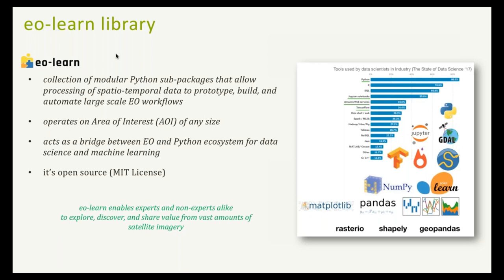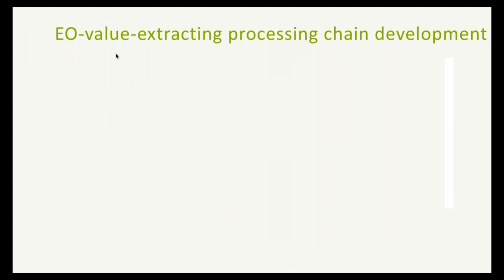eo-learn is a collection of Python sub-packages that mainly aims to process spatial-temporal data, enabling users to prototype, build, and automate large-scale EO workflows. What makes it different from other packages is that it operates on any area of interest of any size — it's not limited to a Sentinel-2 tile. We hope eo-learn acts as a bridge between earth observation and the Python ecosystem for data science and machine learning. It's open source, published under the MIT license, so you can use and contribute to it freely.